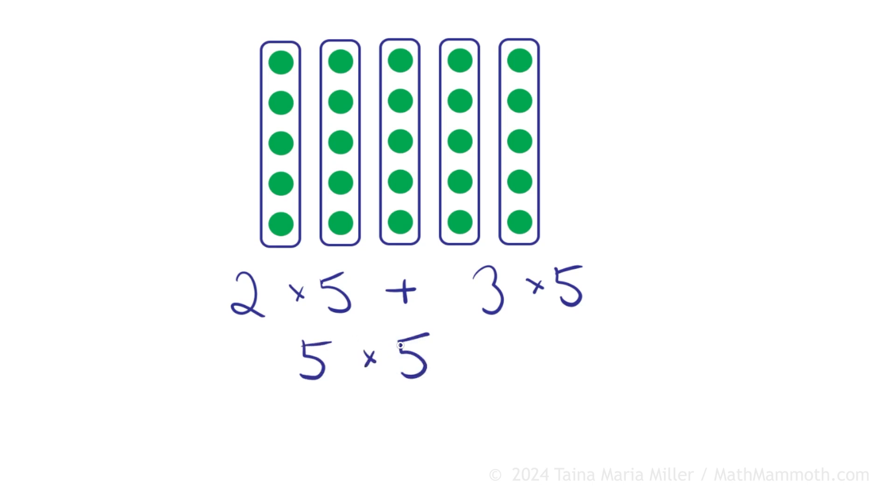If we think of it as partial products, it refers to the fact that 5 × 5 is a product. It's a multiplication, in other words, and it can be broken into parts, partial products. 2 × 5 is one product, 3 × 5 is another product. So they are like parts of the 5 × 5. And now if we look at how many is it, 2 × 5 here is ten. 3 × 5 is fifteen. And 5 × 5 is ten plus fifteen, so it's twenty-five. So that's easy, right?